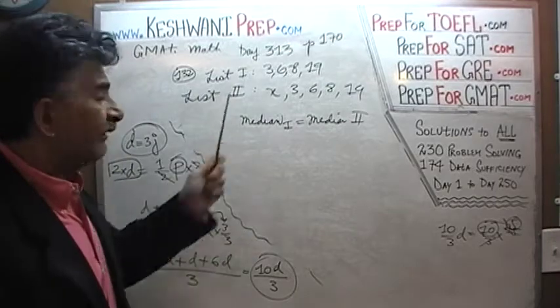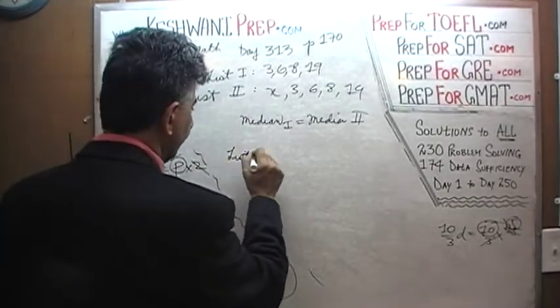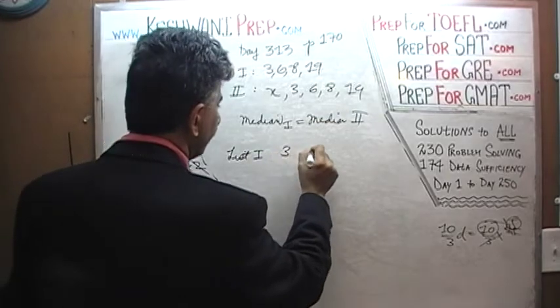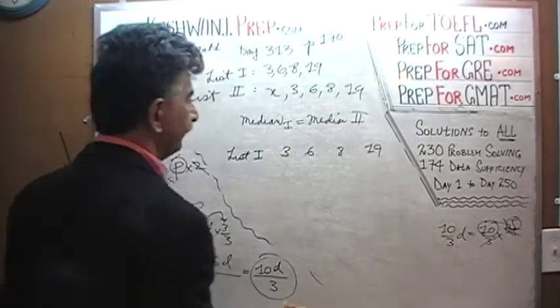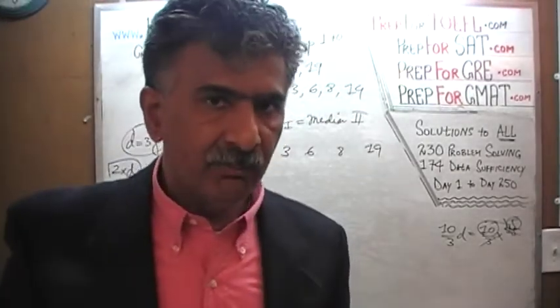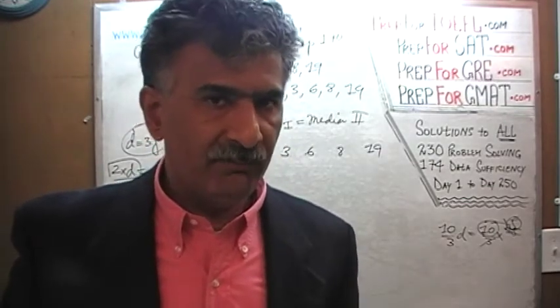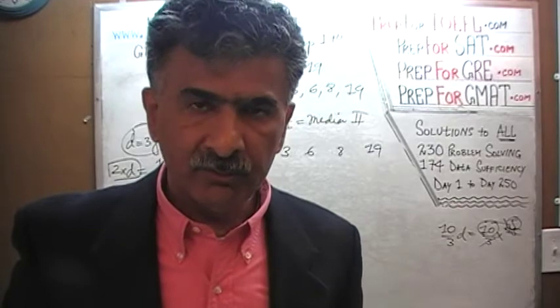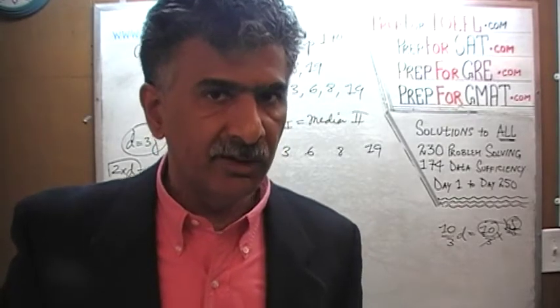Very simple. Let's find the median of list 1. Here is our list 1: 3, 6, 8 and 19. The median as we know is the middle number after the numbers have been arranged in either ascending order or descending order. After all the numbers have been arranged either in increasing order or in decreasing order.